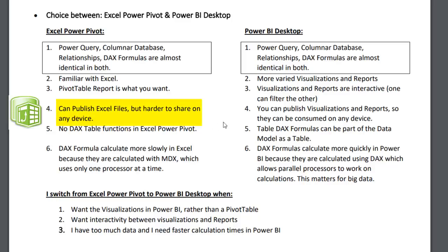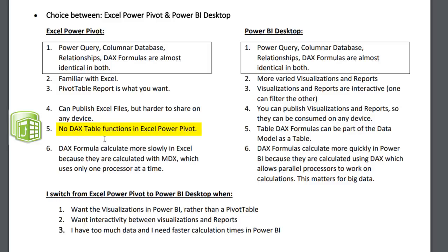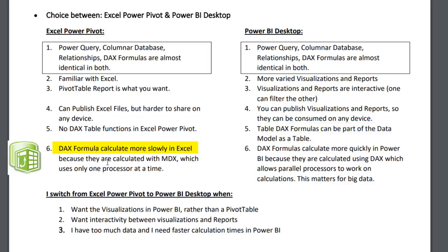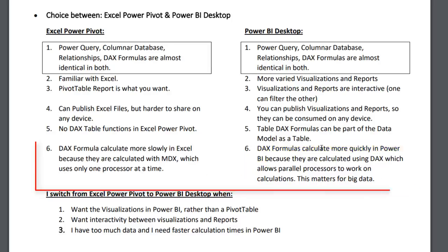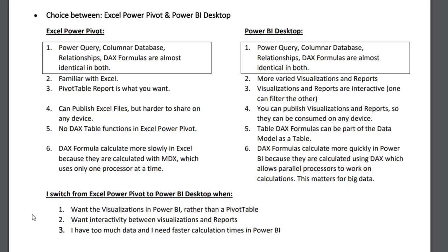With Power BI Desktop, whatever report you create can be consumed on any device. Excel Power Pivot also does not have DAX table functions — in this video we'll see a DAX table formula used as part of the data model. Another drawback: DAX formulas calculate more slowly in Excel but more quickly in Power BI Desktop. This only matters with very big data, but if things are slowing down in Excel, you can send the data model over to Power BI Desktop. I switch to Power BI Desktop when I want interactive visualizations rather than a pivot table, or when I need faster calculation times.